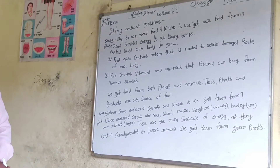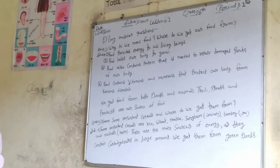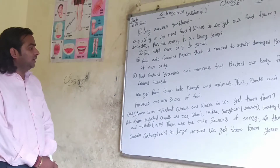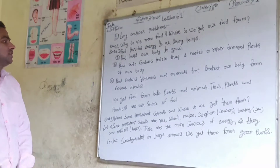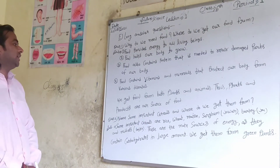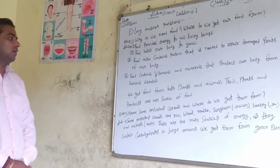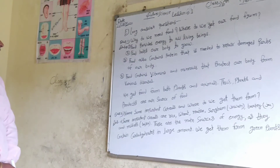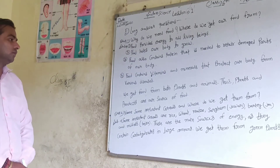Food also contains protein that is needed to repair damaged parts of our body. Food contains vitamins and minerals that protect our body from various diseases. We get food from both plants and animals. Thus plants and animal products are our source of food.